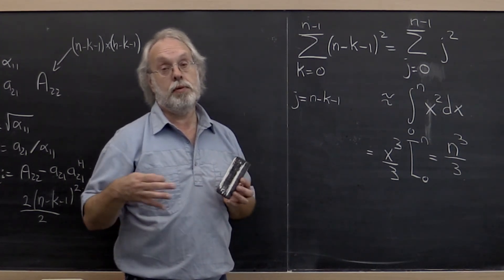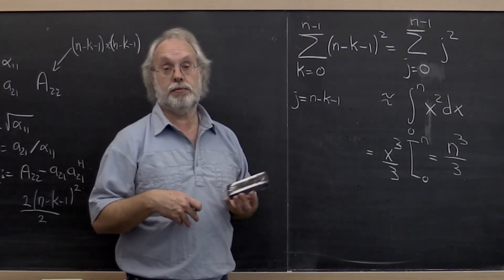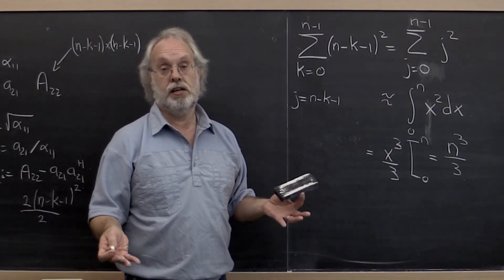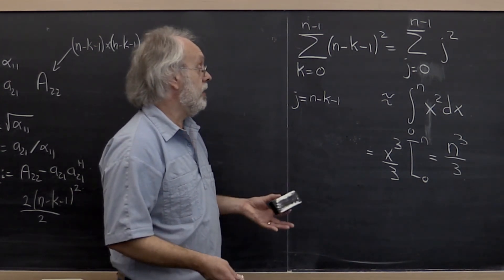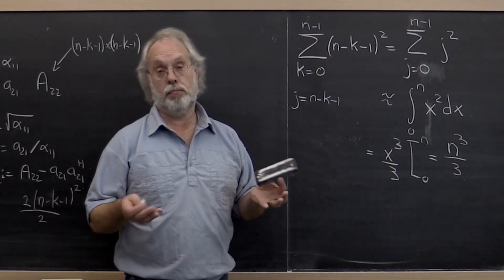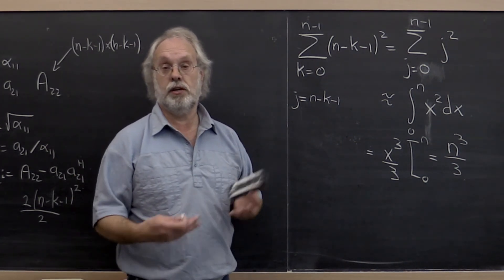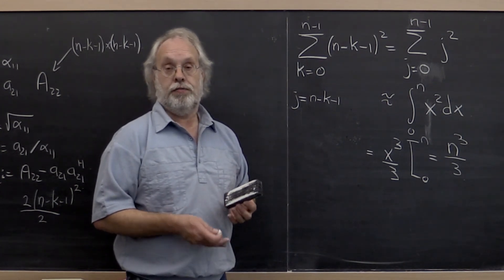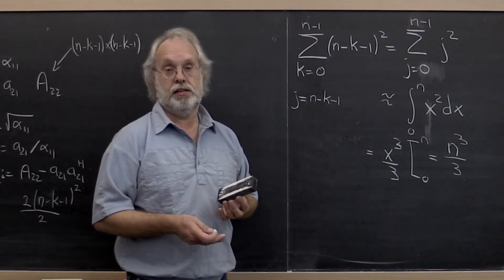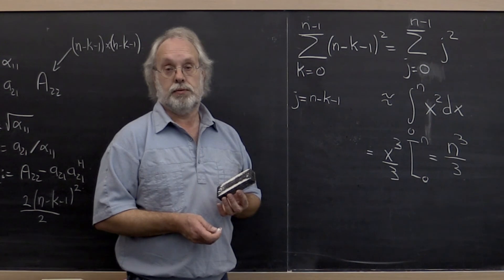Now, you may remember that if you compute the LU factorization of a square matrix, that cost is actually 2 n cubed over 3, approximately. So we see that the Cholesky factorization requires roughly half the number of computations as does the LU factorization.